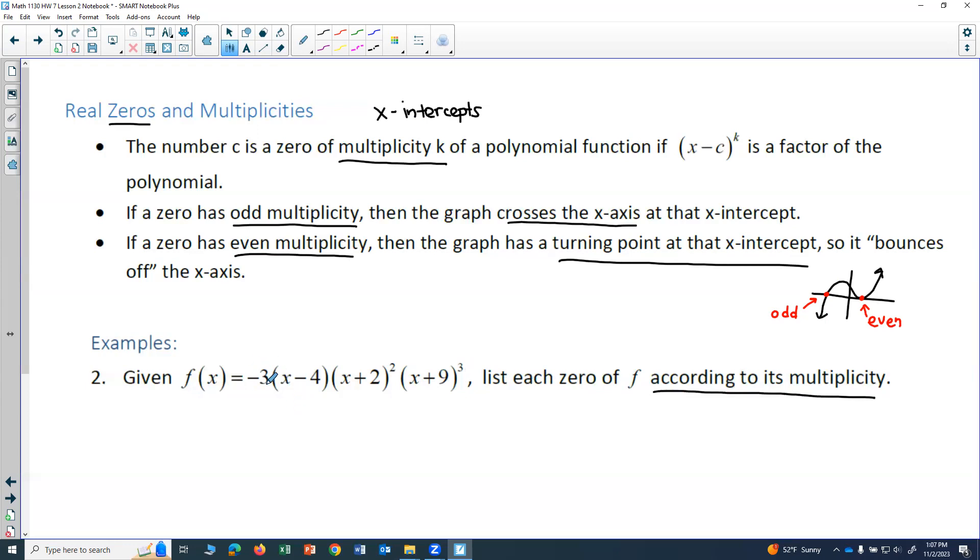So the negative 3 out front does not give us any of the zeros because there's no x attached to that. However, this one.